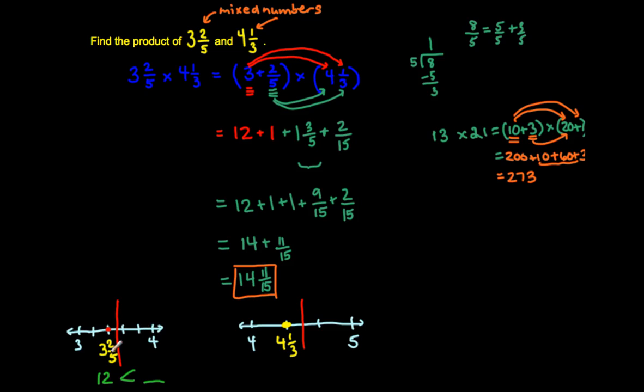But I know that 3 and 2/5 is less than 4 and 4 and 1/3 is less than 5. So when I say less than, I mean to the left of. 3 and 2/5 is to the left of 4 and 4 and 1/3 is to the left of 5. So the answer has to be less than 4 times 5, which is 20.